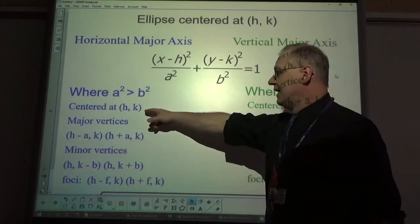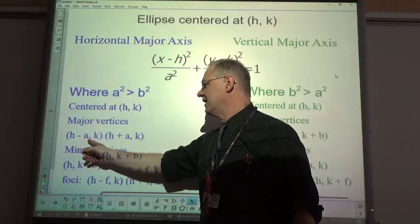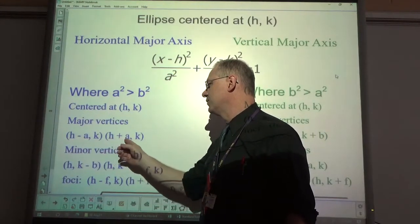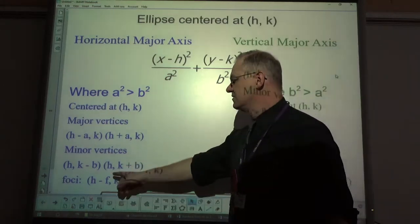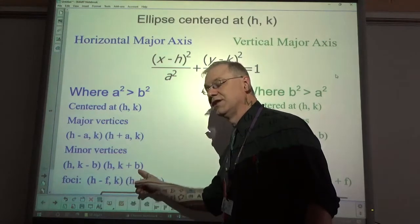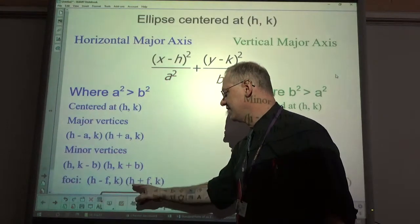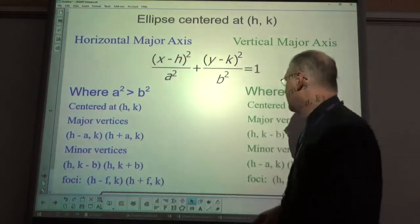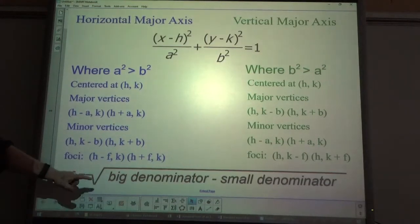If it's centered at (h,k), the major vertices are (h minus a, k) and (h plus a, k) — you'll have to calculate those out. The minor vertices are (h, k minus b) and (h, k plus b). The foci are at (h minus f, k) and (h plus f, k). You find f the same way as when centered at (0,0): square root of the big denominator minus the small denominator.